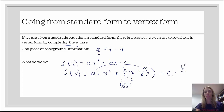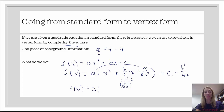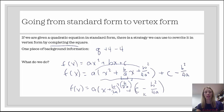So we subtract b squared over 4a outside the parentheses to undo what we added. Now the expression inside the parentheses is a perfect square trinomial, which factors into x minus b over 2a, quantity squared. Combined with the remaining constant terms, this gives us the vertex form — where k is the constant piece outside and negative h comes from inside the parentheses. That's the process for going from standard form to vertex form.